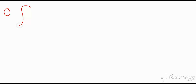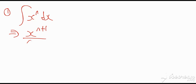If you understand how to differentiate, you can generate the rules for integration. For polynomials, the general rule for integrating x to the n with respect to x is: add one to the power, giving n plus one, and divide by the new power n plus one, then add the constant of integration c.